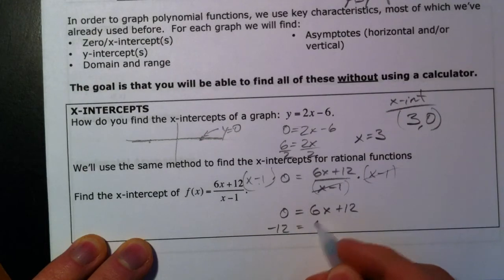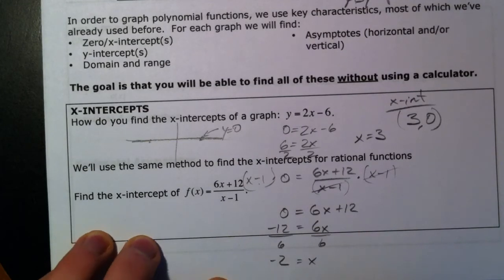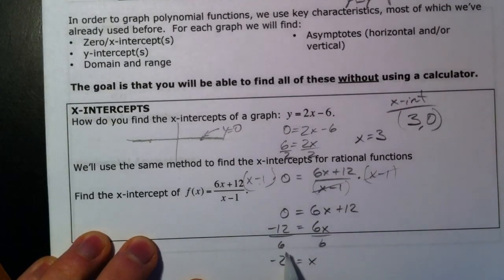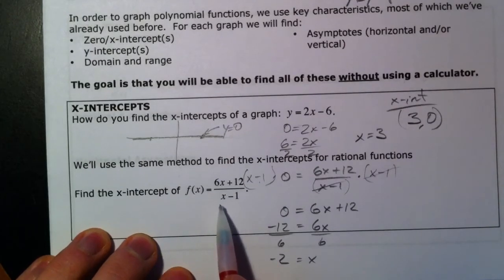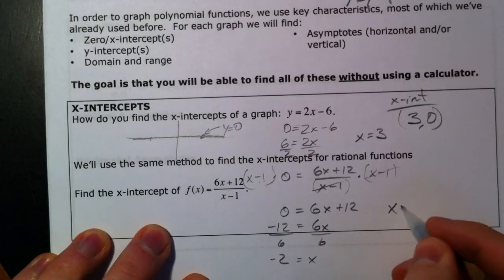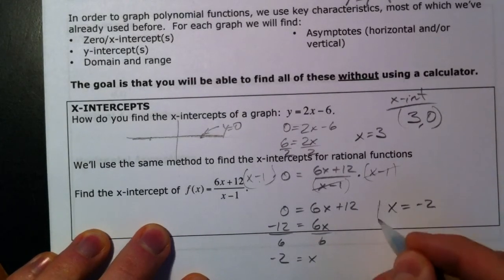So if we subtract the 12, you get negative 12 equals 6x, divide by 6, x equals negative 2. So the x-intercept of this rational function is x equals negative 2.